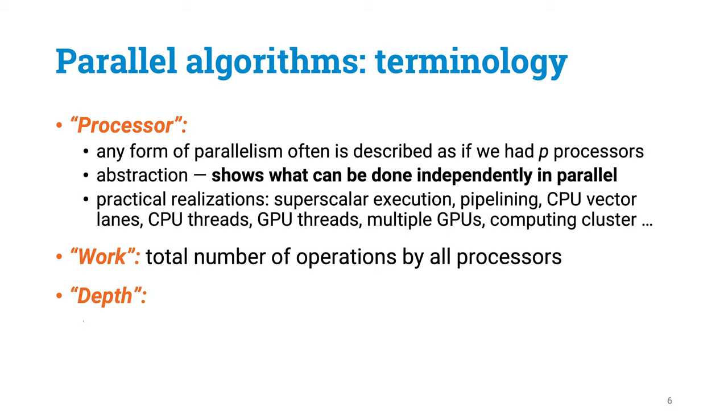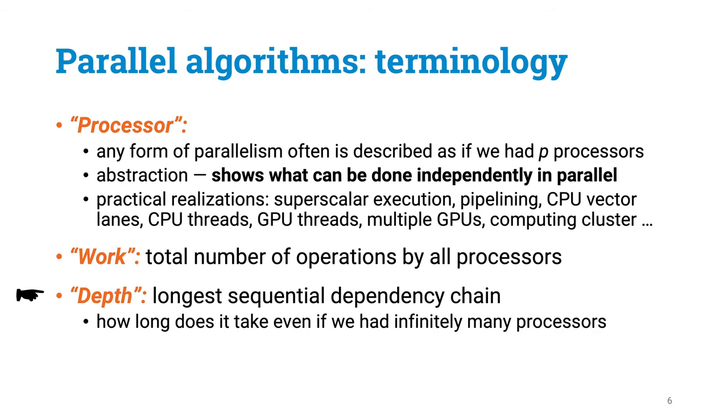However, we also want to have algorithms with a small depth. The depth here refers to the length of the longest sequential dependency chain. Basically, this tells how much time you will need, no matter how many parallel processors you have. So ideally, we would have parallel algorithms that don't do any more work than the best sequential algorithms, and that have as small depth as possible. If the depth is much smaller than the amount of work, then we can benefit from a large number of processors.